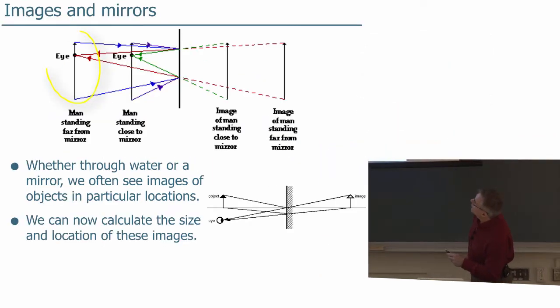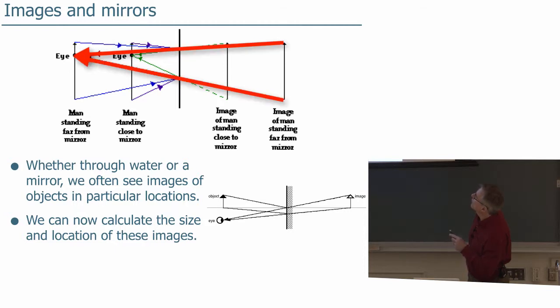Here we have a representation of a very thin person with an eye. So from their feet, the light bounces off the mirror and reaches their eye like that. From the top of their head, light bounces off like that, so it appears that they are back there.